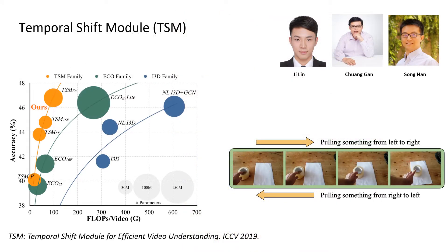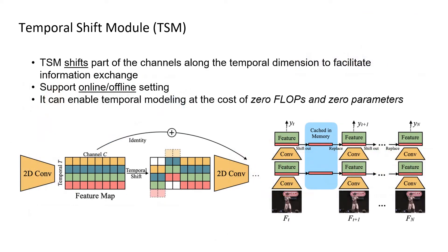One of the state-of-the-art models is designed by us last year, named TSM, Temporal Shifting Module. TSM enjoyed both high efficiency and high performance, and has been widely used in many video-related applications. The key idea of TSM is to shift part of the channel along the temporal dimension, thus enabling information exchange among neighboring frames. It can be inserted into any CNN architecture to achieve temporal modeling at zero computation and zero parameter cost.